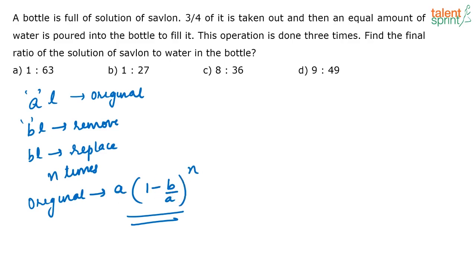Now in this bottle, since they have asked only for the ratio, I am just assuming that there is one liter of Savlon in the beginning. So what is A? A is 1. Out of this, how much is taken out? 3/4 is taken out, and you are replacing it with water and you are doing it 3 times.